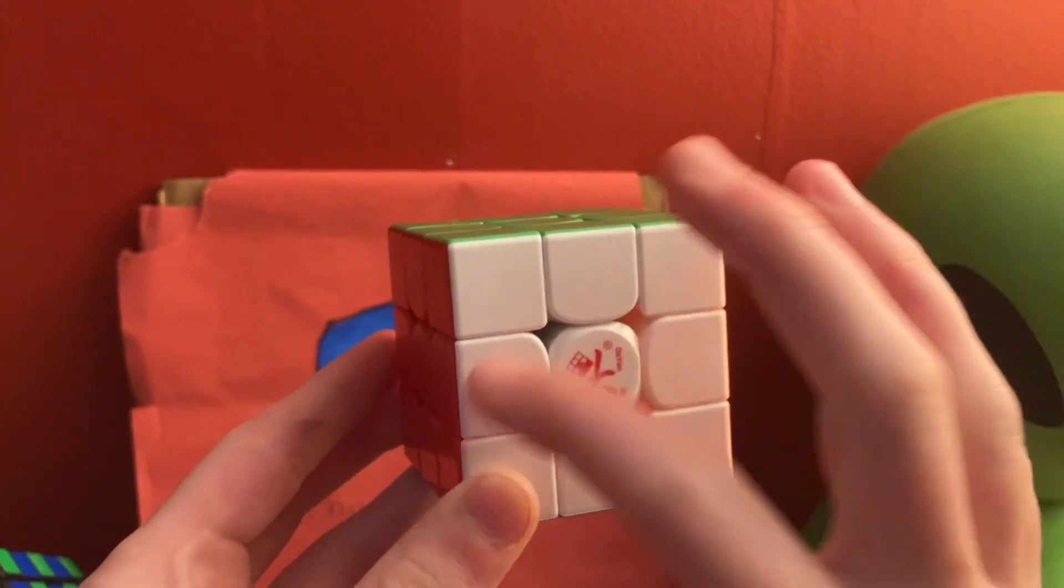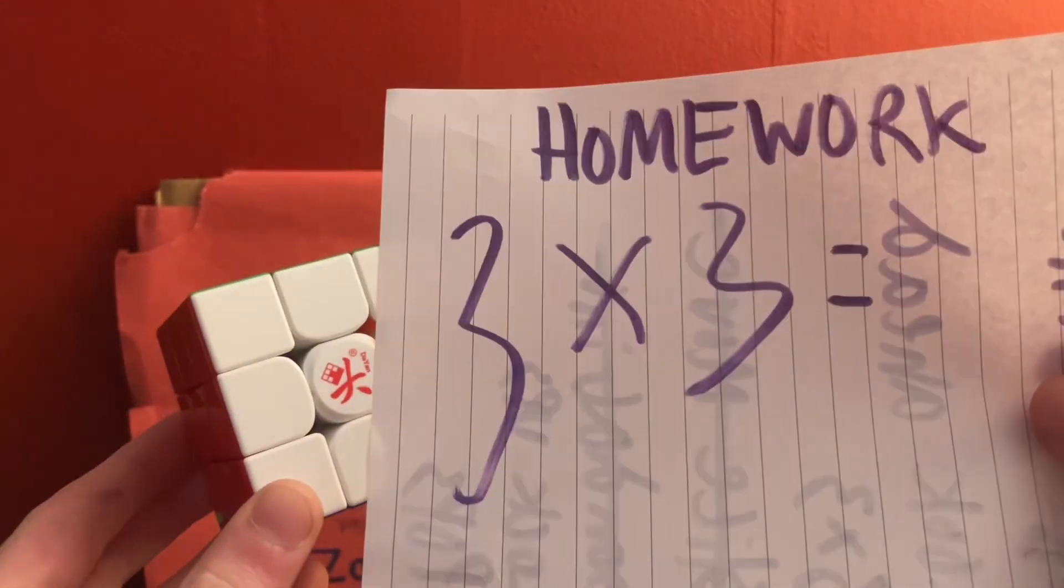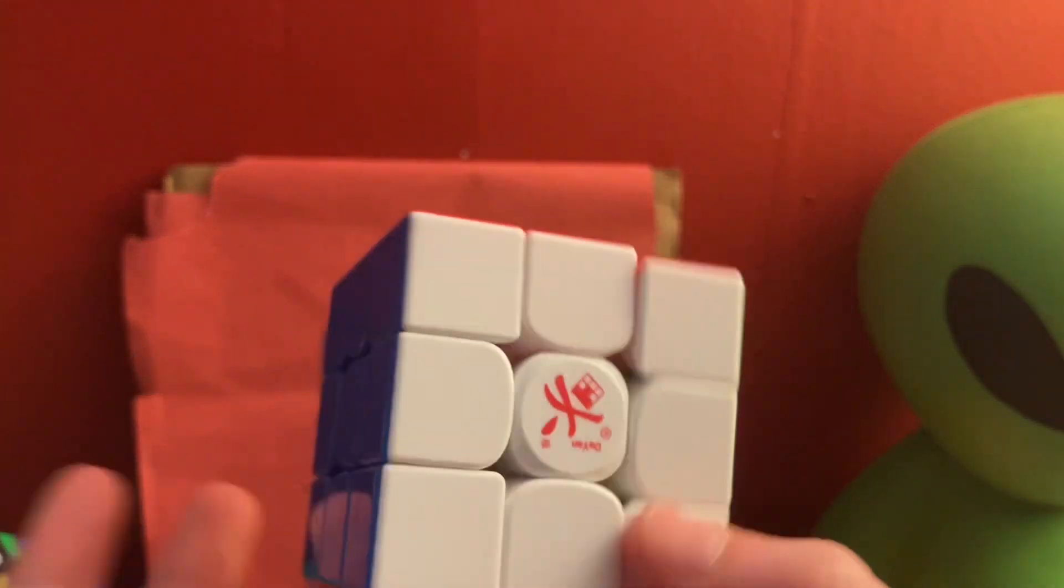3, 1, 2, 3, 4, 5, 6, 7, 8, 9. 3 times 3 is 9. Doesn't that mean this would be a 9x9?